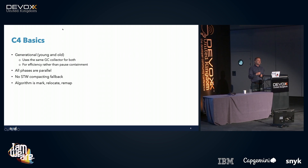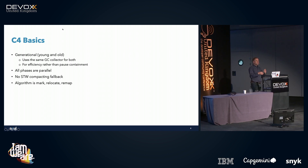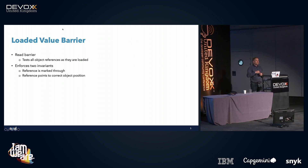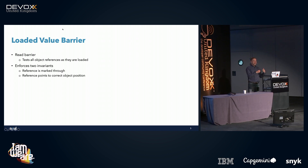C4's algorithm has three phases: a marking phase to identify which objects are still in use, a relocation phase to move objects within the heap to compact them, and a remapping phase to update information in the object headers — all done concurrently. The way we do this concurrently is through what we call the Loaded Value Barrier, effectively a read barrier. Every time you access an object in the heap, we intercept that and look at bits in the object header to check if the state matches what we need. If it doesn't, we jump to a handler and do some work.